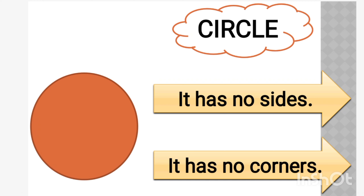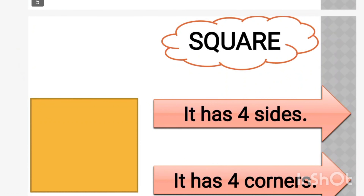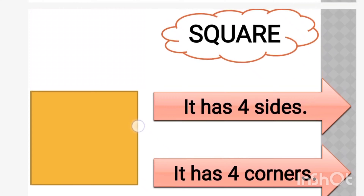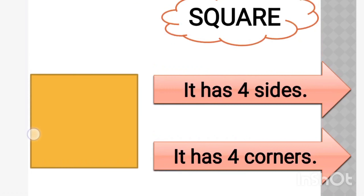The next shape is square. Square has four sides — square के पास four sides होती है. How do you know this shape has four sides? You just count. Count all the sides: one, two, three, four.